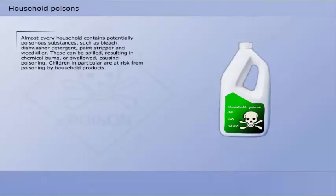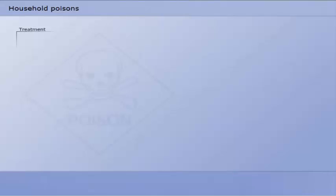Almost every household contains potentially poisonous substances such as bleach, dishwasher detergent, paint stripper, and weed killer. These can be spilled, resulting in chemical burns, or swallowed, causing poisoning. Children in particular are at risk from poisoning by household products.